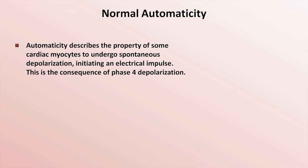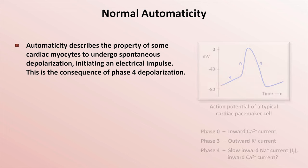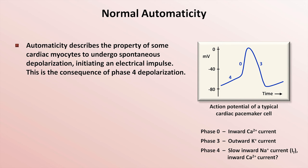This is the consequence of something called phase IV depolarization. This graph shows the action potential across the membrane of these myocytes. The action potential itself begins with a relatively rapid depolarization in phase 0, and is immediately followed by repolarization in phase 3. In contrast to most myocytes, in which the membrane potential during phase IV is constant due to balance of inward and outward currents, in myocytes displaying automaticity, the inward current during phase IV exceeds the outward current. Thus, there is slow, spontaneous depolarization until a threshold potential is reached and an action potential is fired at the beginning of phase 0.